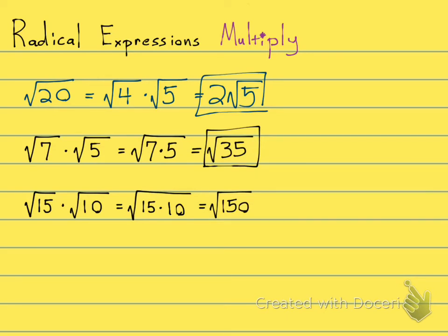And now I can simplify this. The square root of 150. What's a perfect square that goes into 150? And if you're thinking about money, $1.50, you're thinking that 25 cents quarter goes into there. So 25 does go into 150.